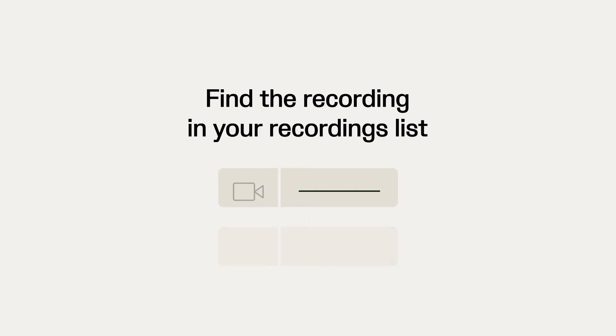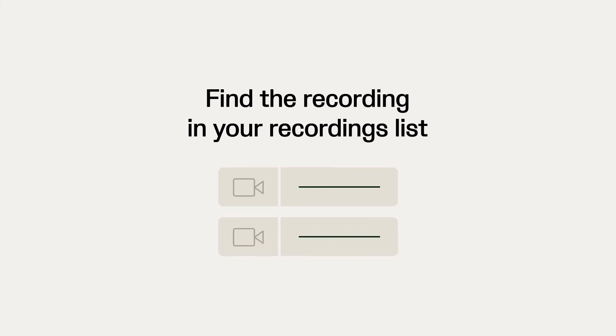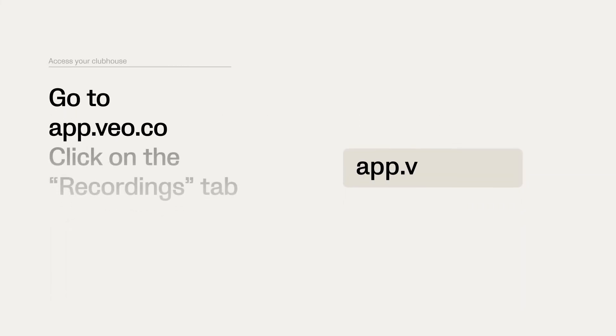After the recording has been uploaded, you can find the video in your recordings list in your clubhouse. To access your clubhouse, go to app.vio.co and click on the Recordings tab to view your recordings list.